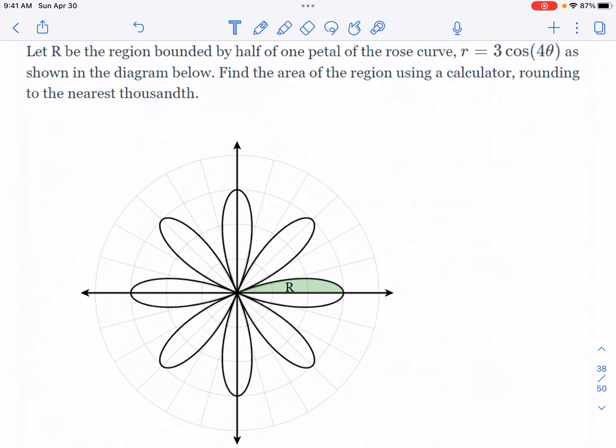This is from Delta Math. It says let r be the region bounded by half of one petal of the rose curve r = 3cos(4θ) as shown in the diagram. Find the area of the region using a calculator, rounding to the nearest thousandth. The first thing to notice is the formula is not anything you need to think about. Our area equals—I'm going to put the 1/2 on the outside—one half, and r squared. In our case, r is this, so you just square that: 3cos(4θ) squared dθ. So that's not hard.